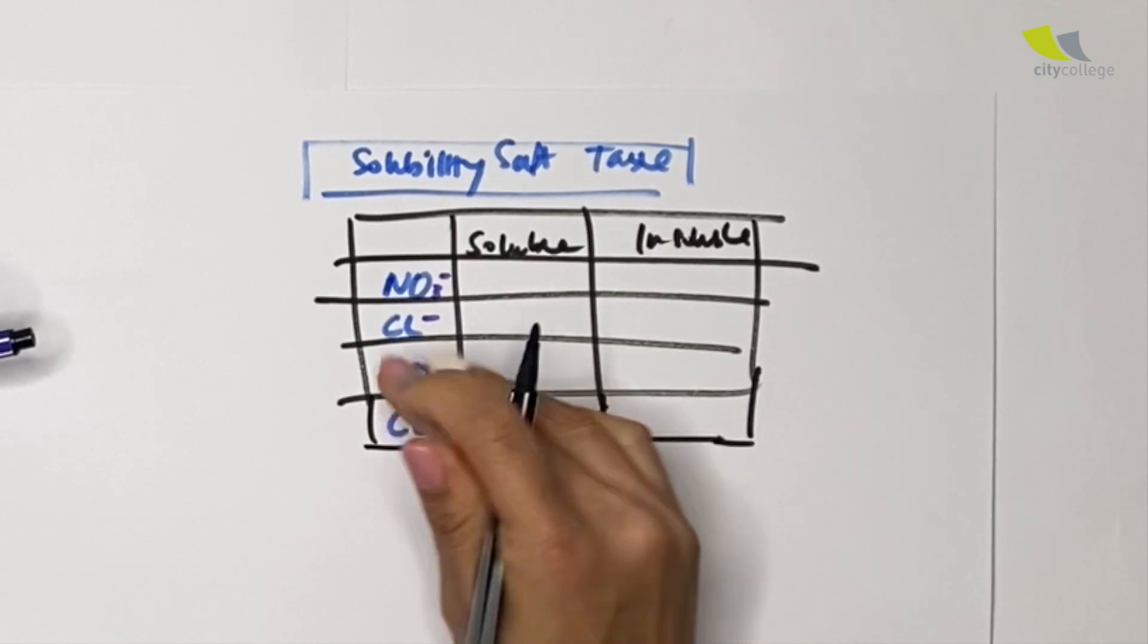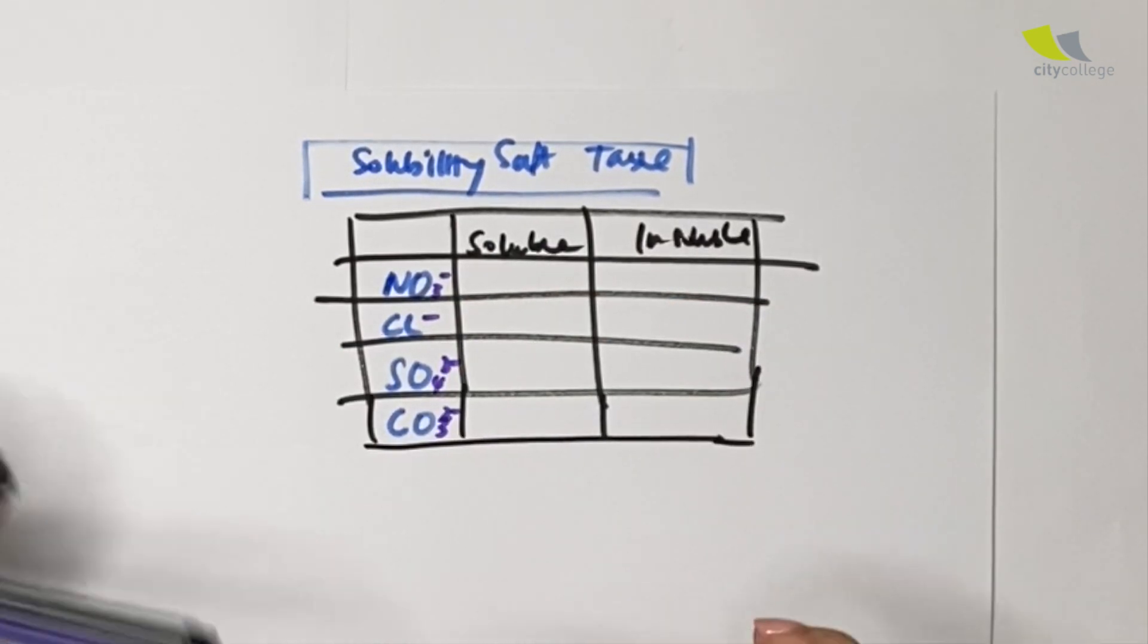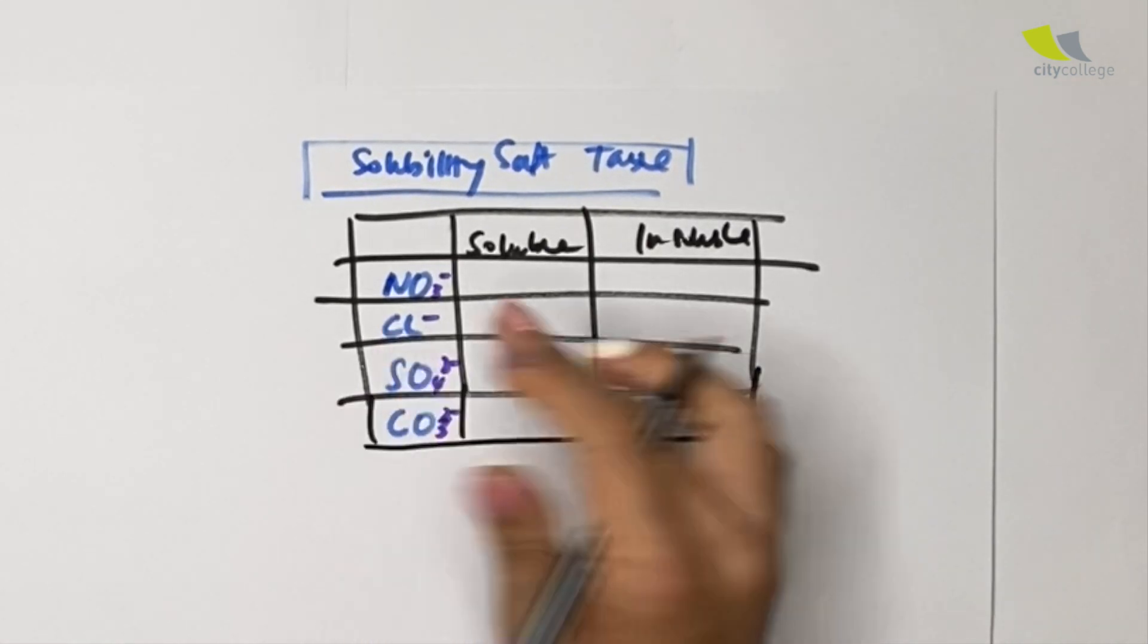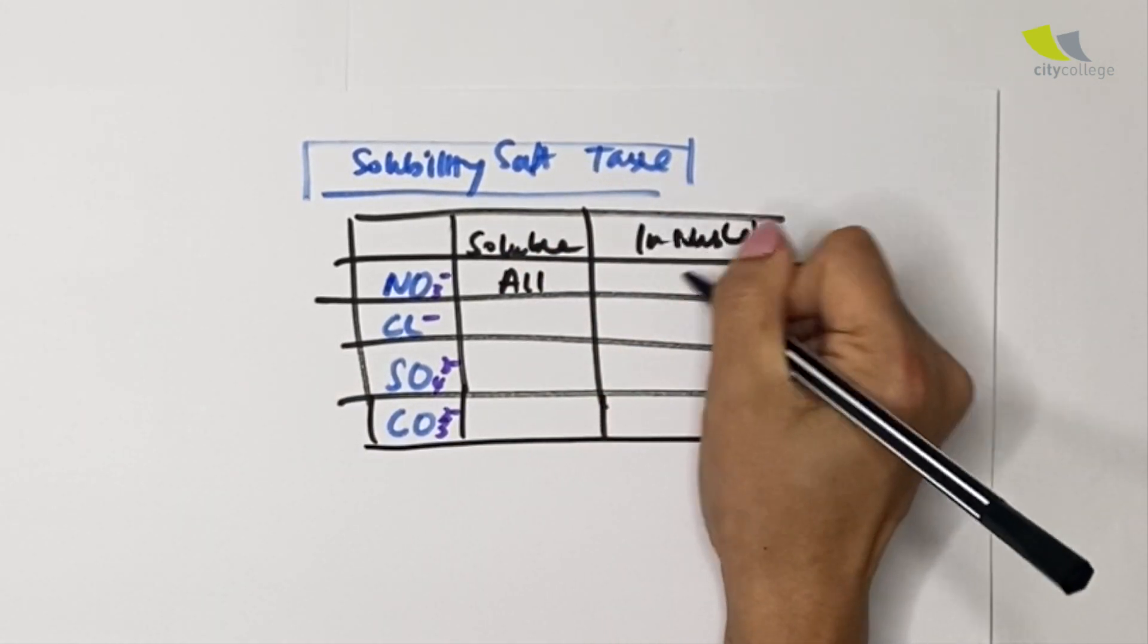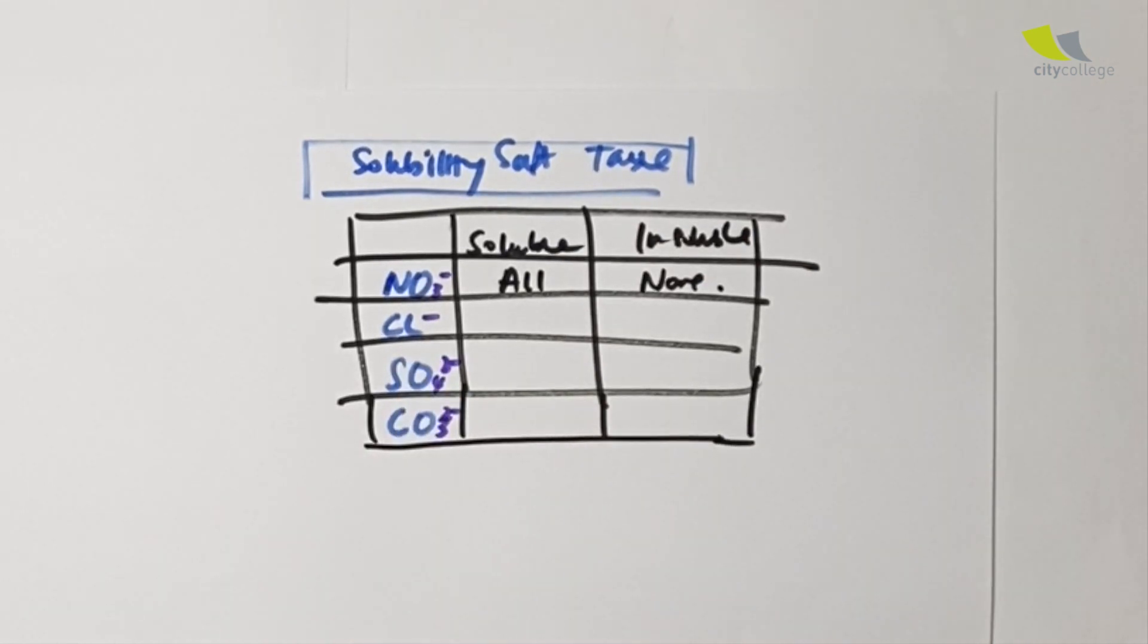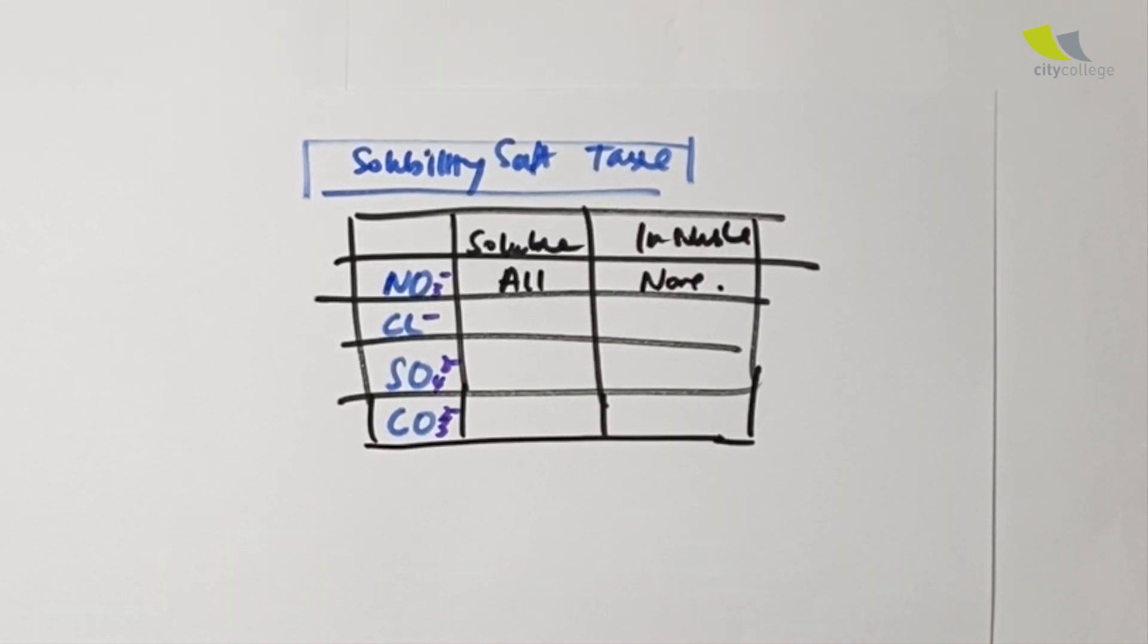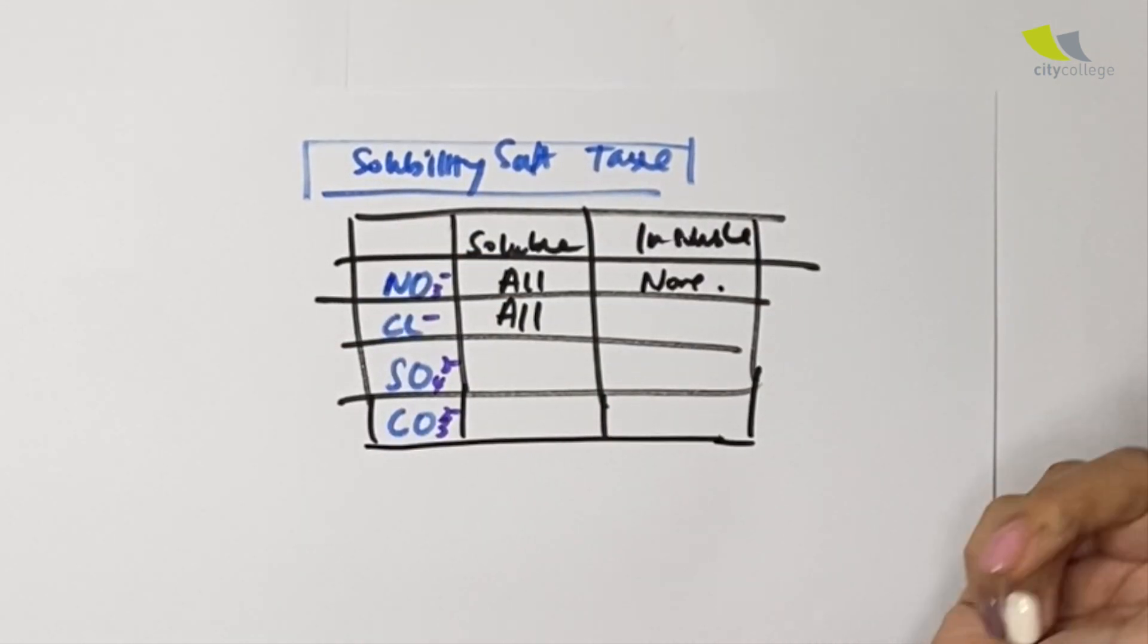Now after you're able to remember all these four anions, you can fill up this solubility salt table easily. Like I always mentioned in all my videos, nitrates—all nitrates are soluble. So all nitrates soluble, insoluble none.